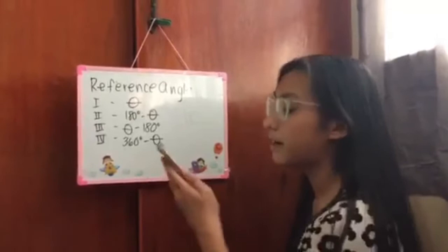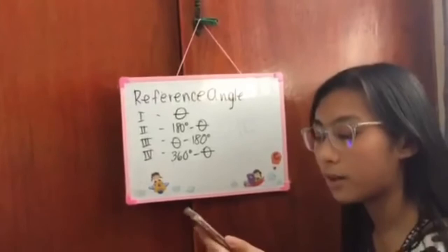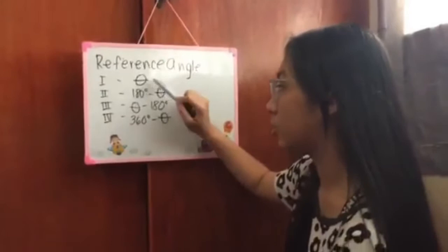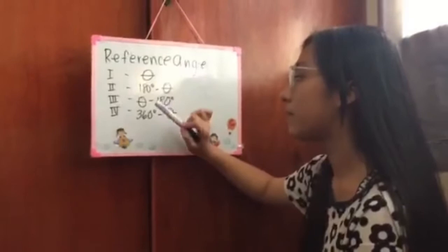Next is reference angle. Reference angle is the positive acute angle that can represent an angle of any measure. There are formulas for quadrant 1, 2, 3, and 4. For quadrant 1 it's just the angle. Quadrant 2 is 180 degrees minus angle. Number 3, angle minus 180 degrees. For quadrant 4, 360 minus angle.